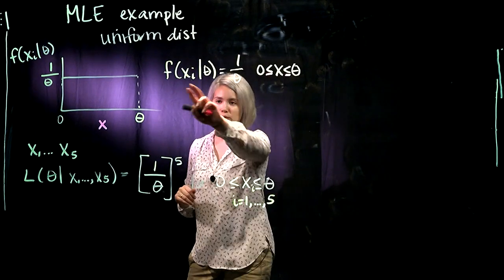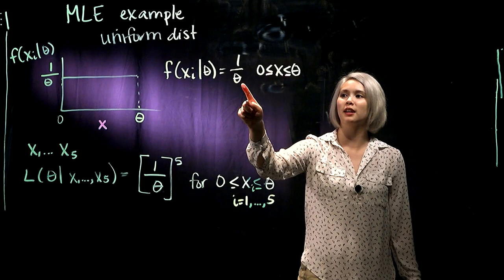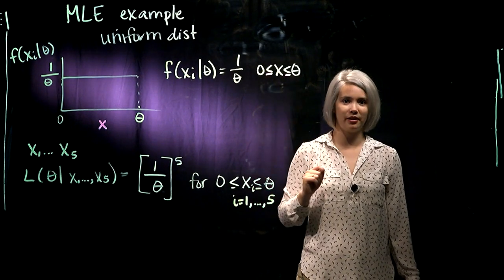So if we wanted to write this out, we have here's our PDF. It's just equal to 1 over theta, as long as we're talking about x values between 0 and theta.